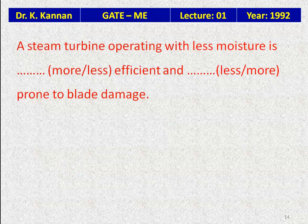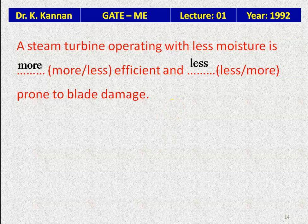Question 12: A steam turbine operating with less moisture is — more or less efficient — more or less prone to blade damage. Wet steam has moisture content. When there is less moisture, efficiency is higher. Also, the presence of moisture damages the blades; so with less moisture, there is less blade damage. The answer: a steam turbine operating with less moisture is more efficient and less prone to blade damage.